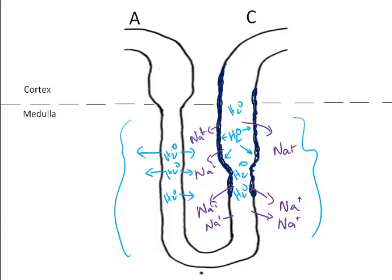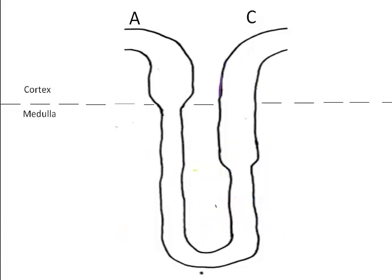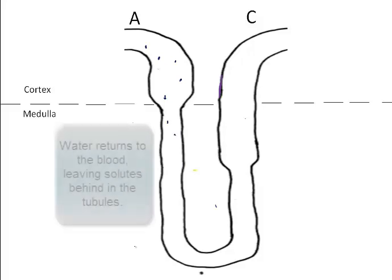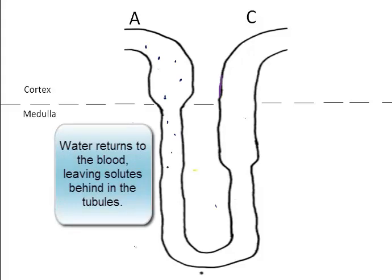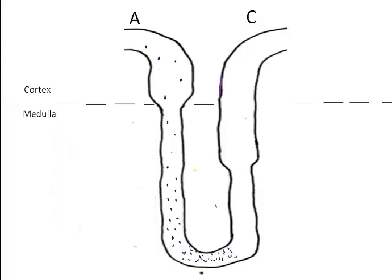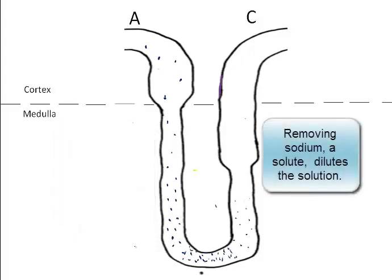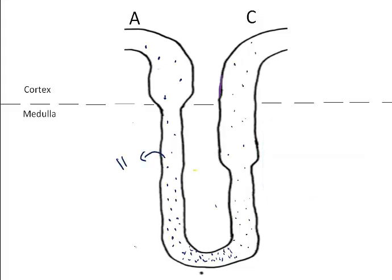In the loop of Henle, where is the filtrate most concentrated? Well, let's just follow the solutes. Entering the loop of Henle, we have a solution which includes water as the solvent, quite a bit of water, and sodium, and nitrogenous wastes. As the fluid moves down the loop of Henle, water is being removed and returned to the medulla region and into the blood vessels. And so the further the solution travels down the descending limb, the more concentrated it becomes. As the fluid moves back up, sodium is removed, and so it becomes less and less concentrated. However, water has been removed over here.